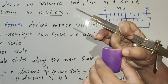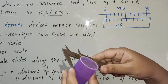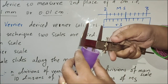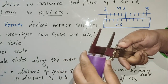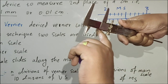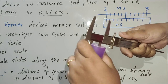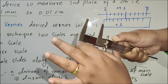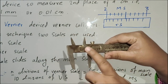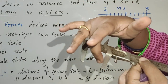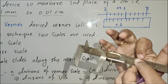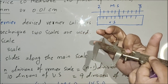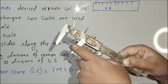Outer diameter can be found using the lower jaw. To find the inner diameter, you insert the upper jaws inside the object and open them — the flat surfaces touch the inner wall — and you can find the inner diameter. The length of the object is read here from the main scale division plus the vernier scale division — both are added together.